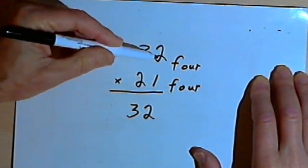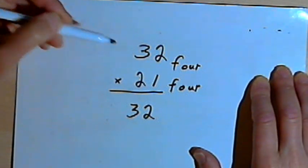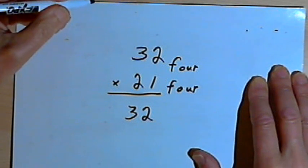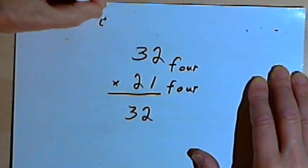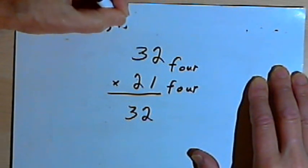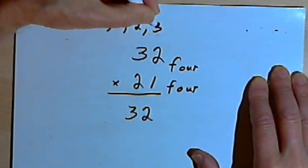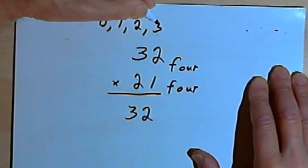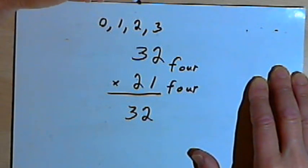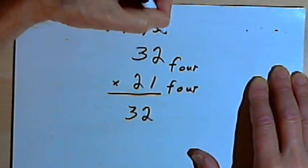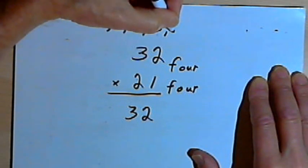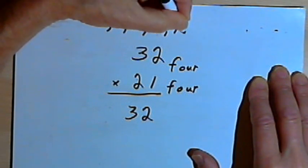But now I've got to do 2 times 32, and that's going to be harder. So what I'm going to do is make myself a little working aid. I'm going to just start writing counting numbers in base 4. So I've got 0, 1, 2, 3. Now that's already 4 digits, and there are only 4 digits in base 4.